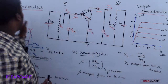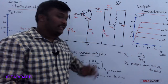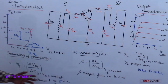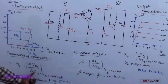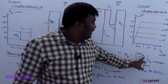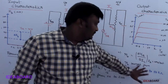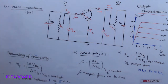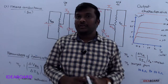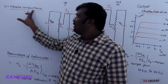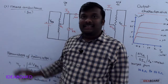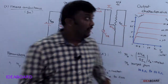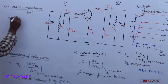Beta ranges from 20 to 200. These three are the important parameters: (1) input resistance RI = ΔVBE/ΔIB at constant VCE, (2) output resistance RO = ΔVCE/ΔIC at constant IB, and (3) current gain β = ΔIC/ΔIB at constant VCE.